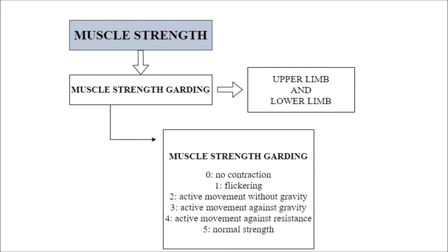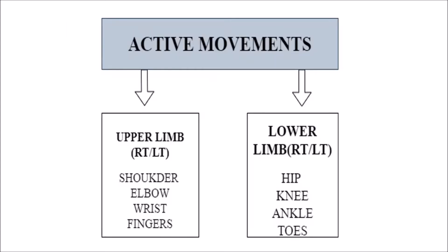Then check shoulder extension, then move to elbow flexors, extensors, abductors, and adductors, checking strength for each muscle. Next we move to active movement, which will be performed by the patient in both the upper limb and lower limb.